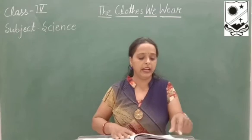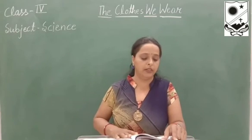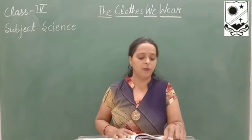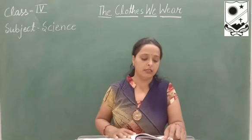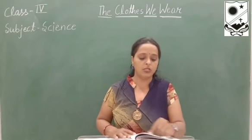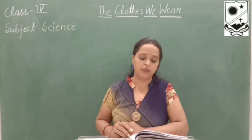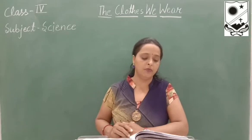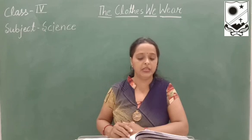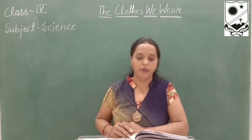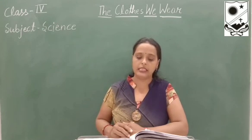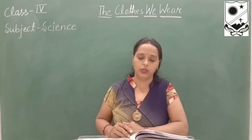Now let us quickly recap what we have read in this chapter. Clothes protect us from extreme weather, insects, and dirt. The choice of clothes depends upon the climate, tradition, and occupation. Clothes are made from natural as well as synthetic materials. Spinning, weaving, dyeing, and printing are different steps to make fabric from fiber. Proper cleaning and ironing of clothes make them look nice and last longer. Clothes should be stored properly to prolong their life.